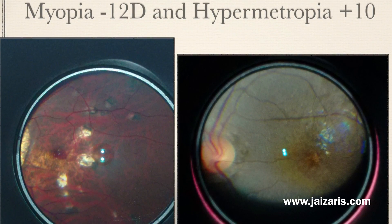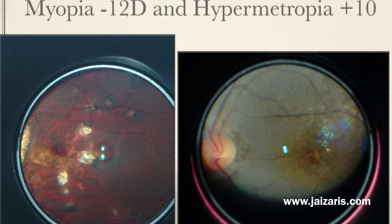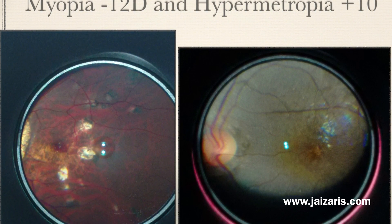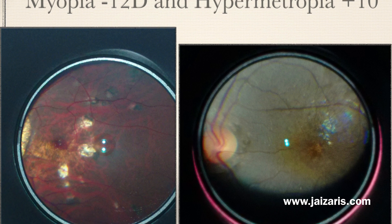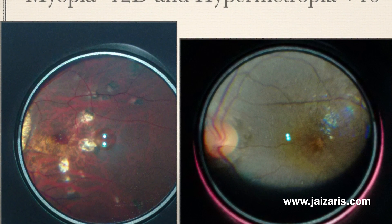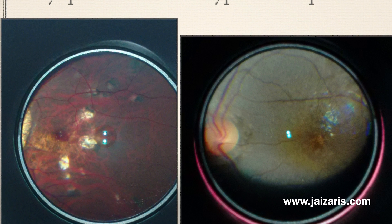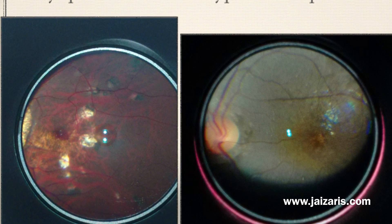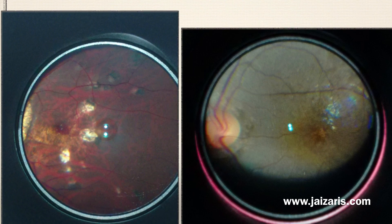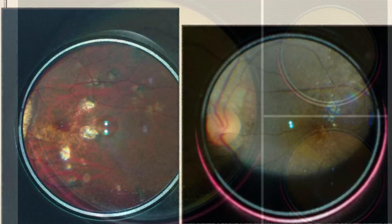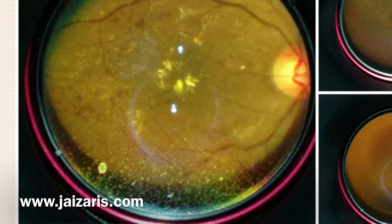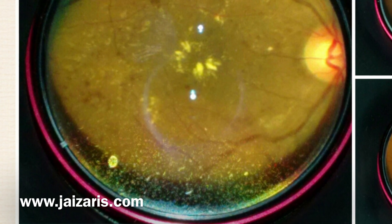The principle of smartphone imaging of the retina is based on indirect ophthalmoscopy, so the field of retina imaged depends on the refractive error of the patient. In high myopia, the field of retina captured is greater than in hypermetropia. In high hypermetropia, imaging is more difficult compared to myopia.